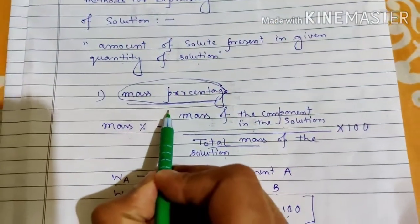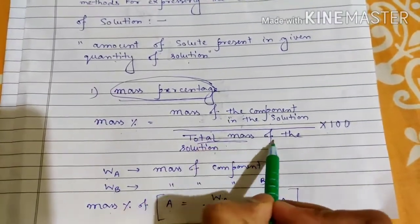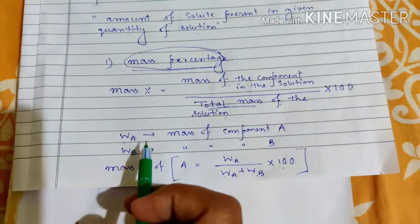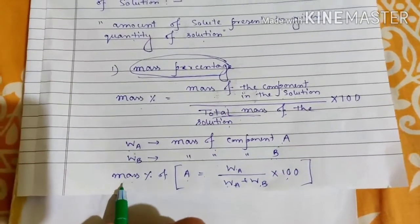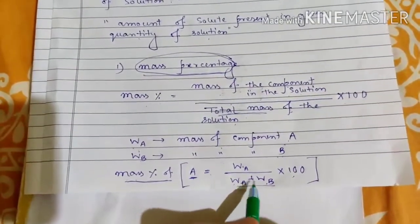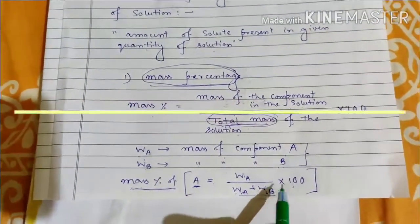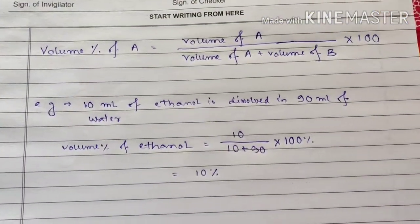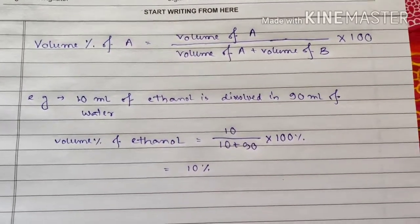Let us look at these expressions mathematically. Mass percentage means the mass of a component in the solution divided by the total mass of the solution, multiplied by 100. If wA is the mass of component A and wB is the mass of component B, then mass percentage of A equals wA divided by (wA + wB), multiplied by 100.